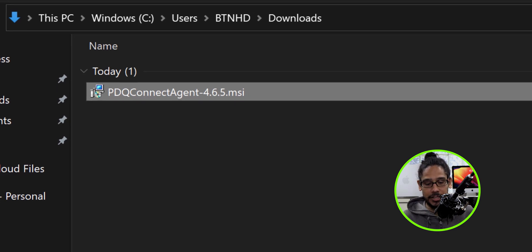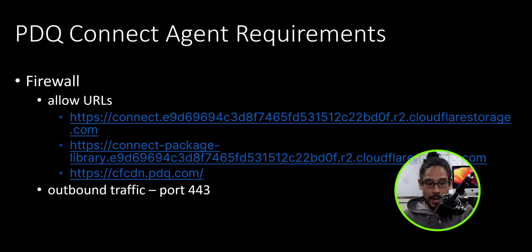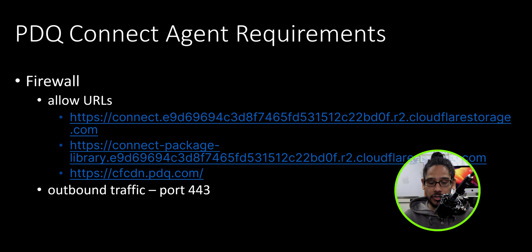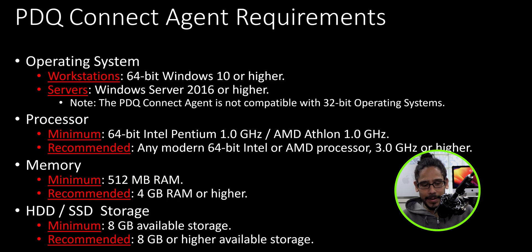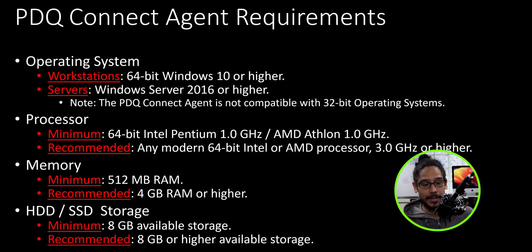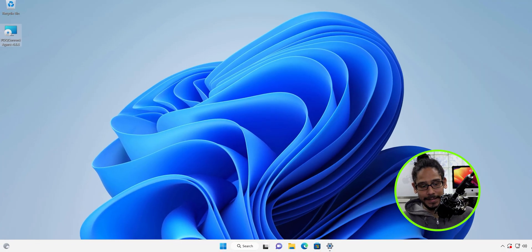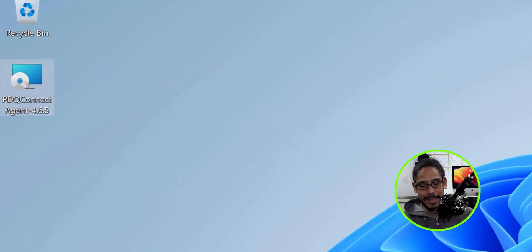Before we do anything, there are core requirements for the agent. For the firewall, you have to make sure it allows these two URLs and also outbound traffic on port 443, which is SSL. For the operating system, processor, memory, and hard drive, these are the core requirements that you need to successfully install the PDQ Connect agent.